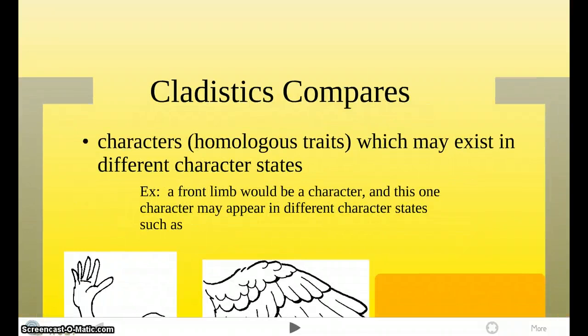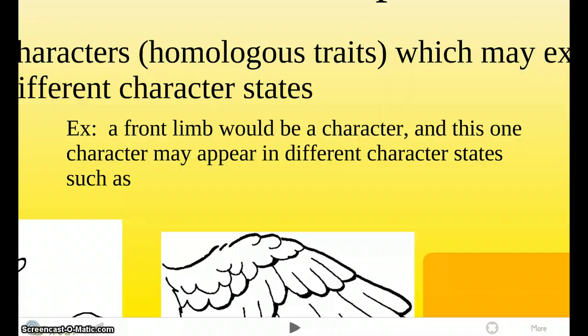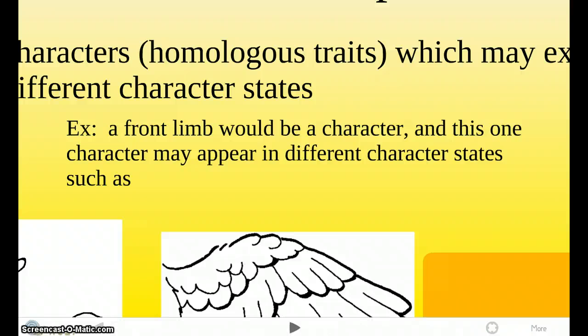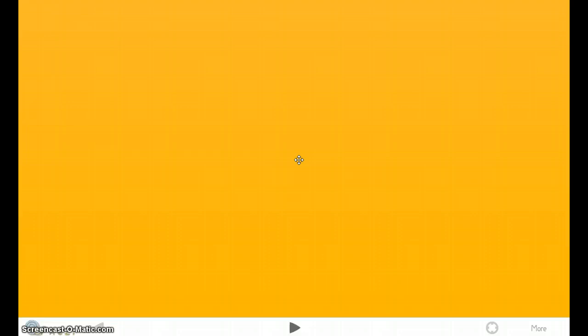Cladistics compares characters, also known as homologous traits, which may exist in different character states. An example of a character would be a front limb, and this one character may appear in different character states, such as an arm like us human beings, a wing like birds, and this picture that did not load, but it was a picture of a flipper, like a dolphin or a fish's flipper.